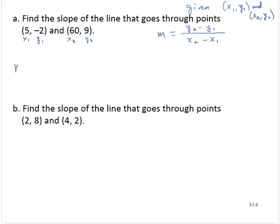So then the slope m would be given as y2, which is 9, minus y1, negative 2, over x2, which is 60, minus x1, which is 5.